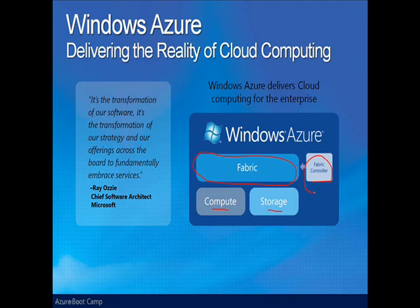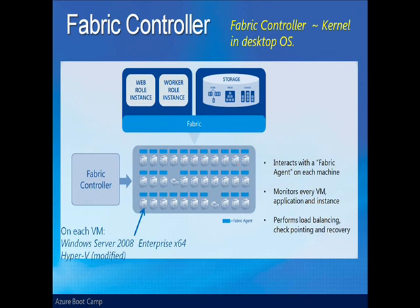The fabric controller is the automated service management system that handles provisioning, geo-distribution, and the entire life cycle of cloud-based services. In essence, the fabric controller acts as a kernel, like you'd see in any other desktop OS. It communicates with a fabric agent running on each machine and is also aware of every application and storage — which it sees as just another application running in the fabric.